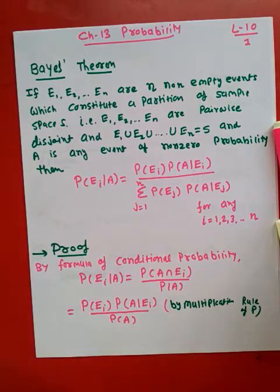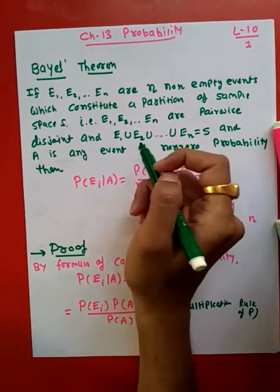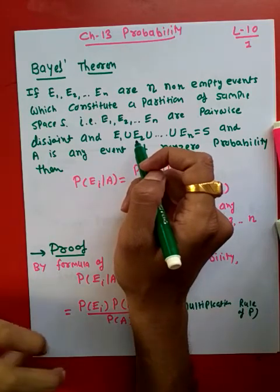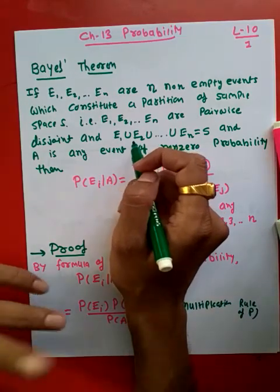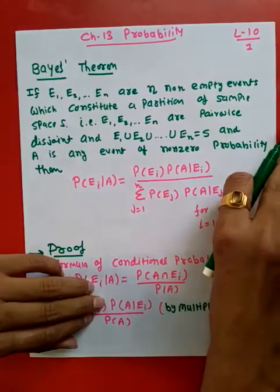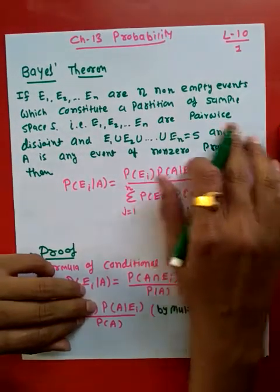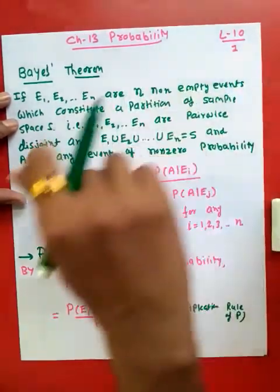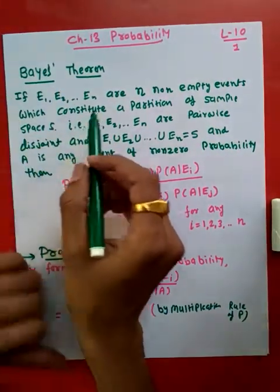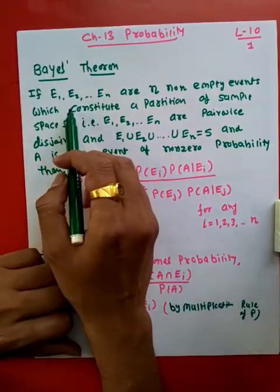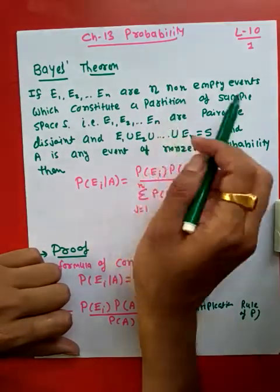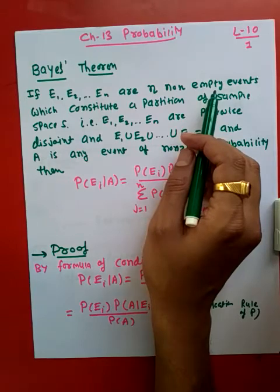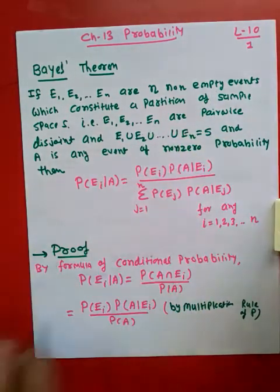Let us discuss Bayes' theorem. In the last lecture we discussed the partition of sample space and the theorem of total probability. This is lecture number 10 on Bayes' theorem. So if E1 to En are n non-empty events — non-empty का मतलब है कि जो event है उसकी probability non-zero है.